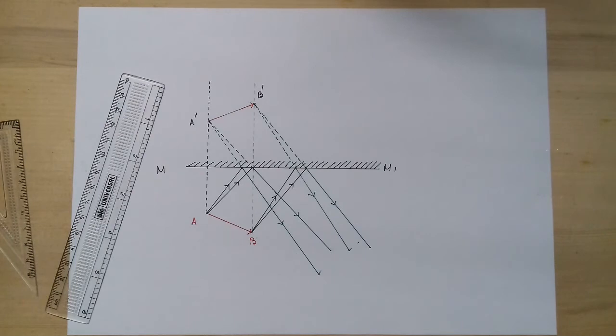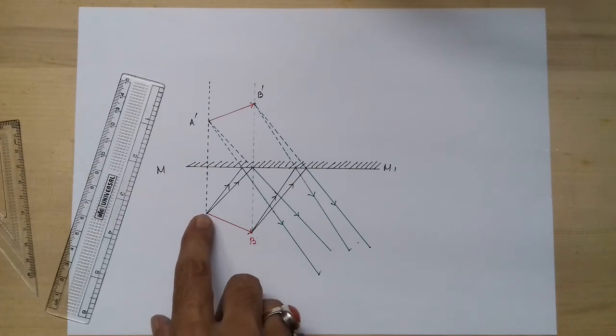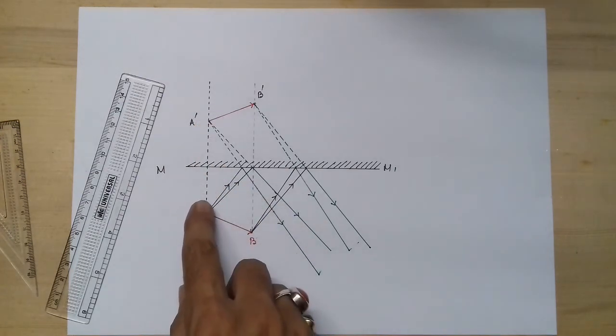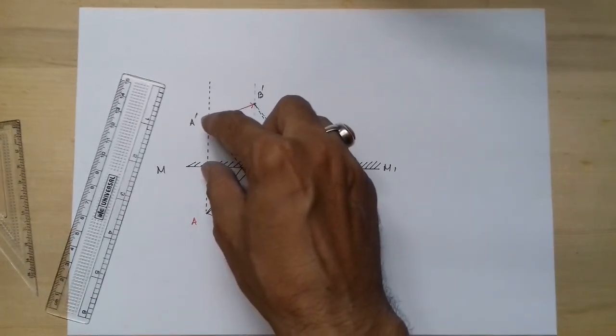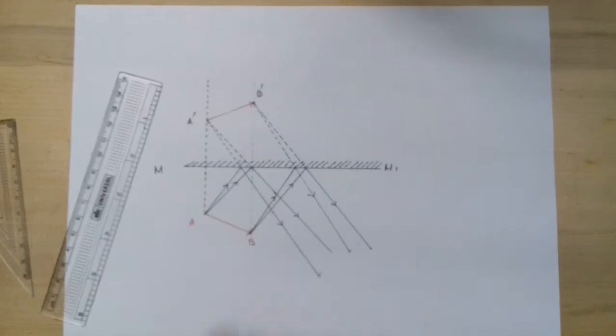In case of a plane mirror, one more thing: the distance between the object and the mirror equals the distance between the image and the mirror.